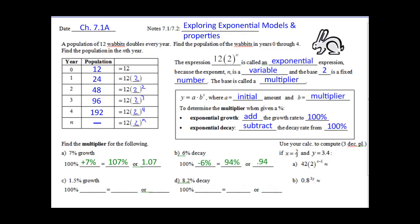Hit pause quickly, try c and d. Alright, for c, 1.5% growth, be careful, should be 101.5% or 1.015. 8.2% decay is 91.8% or 0.918.